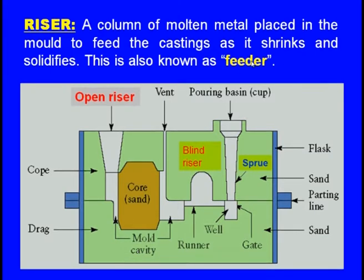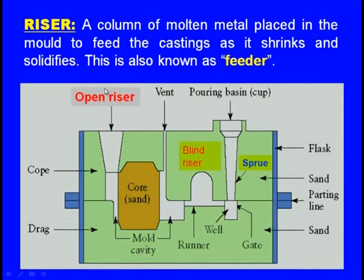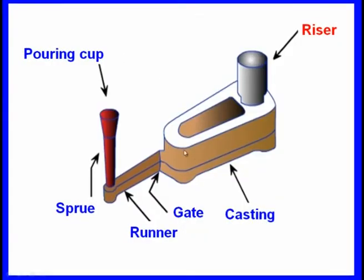Secondary purposes of the riser: when the molten metal rises to the riser level, it indicates the cavity is filled, and we stop pouring — this is the second purpose. Third, immediately after pouring, the hot gases and steam from the mould sand escape through the riser hole. The primary purpose remains to feed the casting during solidification.